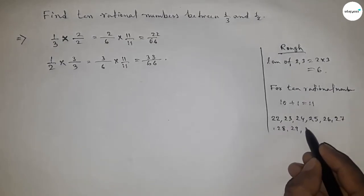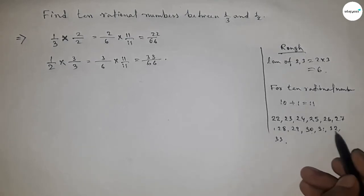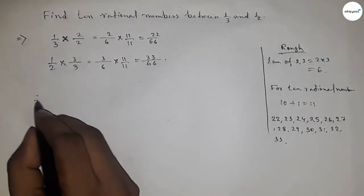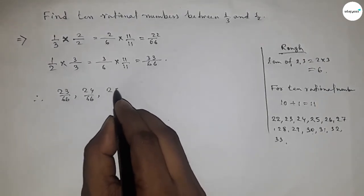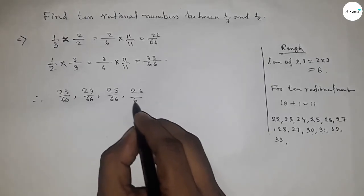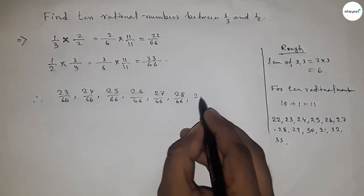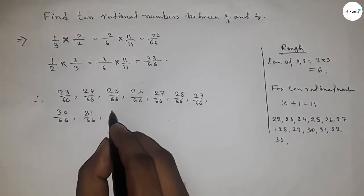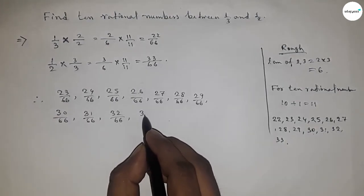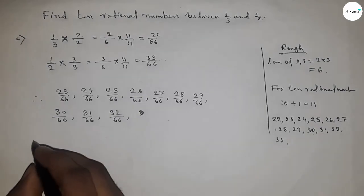By these numbers we can form 10 rational numbers. So the 10 rational numbers are: 23/66, 24/66, 25/66, 26/66, 27/66, 28/66, 29/66, 30/66, 31/66, and 32/66. These are the 10 rational numbers between 1/3 and 1/2.